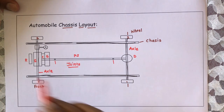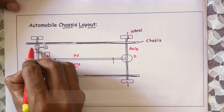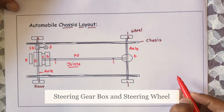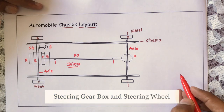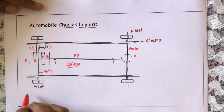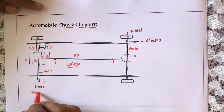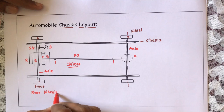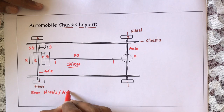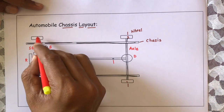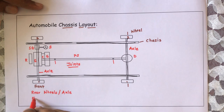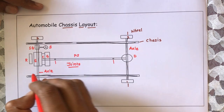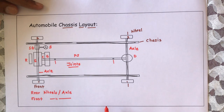Here one more block is there — this is the steering gearbox, and this is the steering. So the parts we have considered include: rear wheels and rear axle, front wheels and front axle.